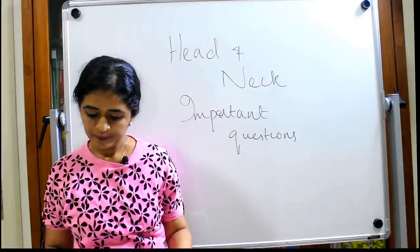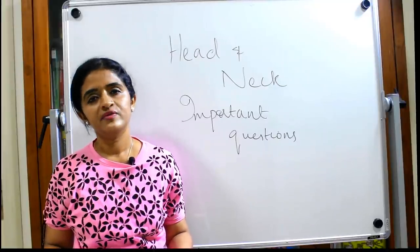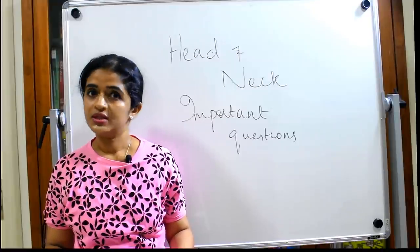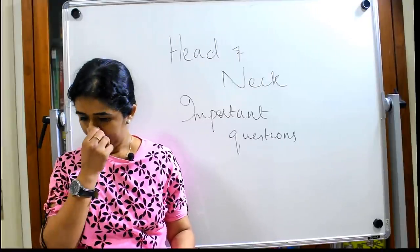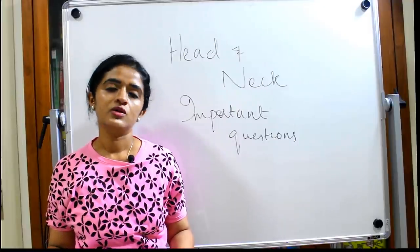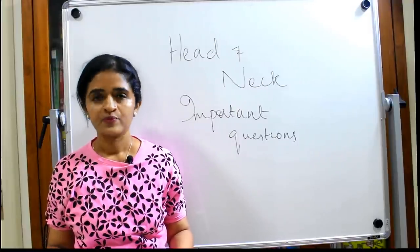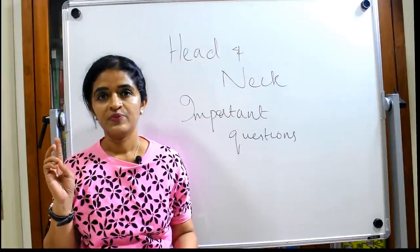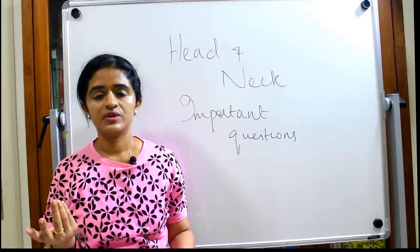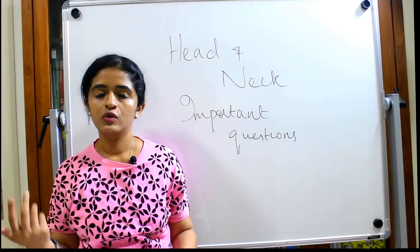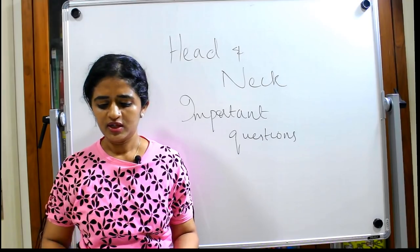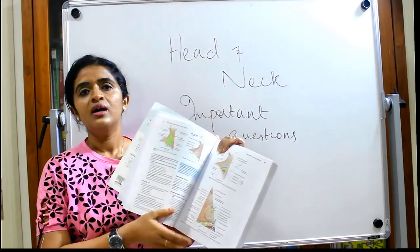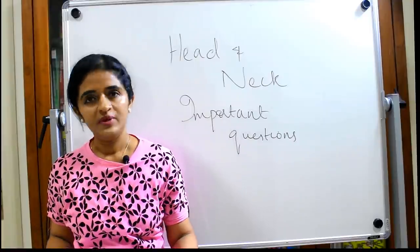Coming to the triangles of the neck — usually a practical topic, but sternocleidomastoid is a very favorite question, and the clinical correlation torticollis or wryneck is again a favorite. The posterior triangle can be asked as a diagram: subdivisions of the posterior triangle, structures forming the floor. There are beautiful diagrams in the book — if you study and review these diagrams before the exam it will be easy to remember.